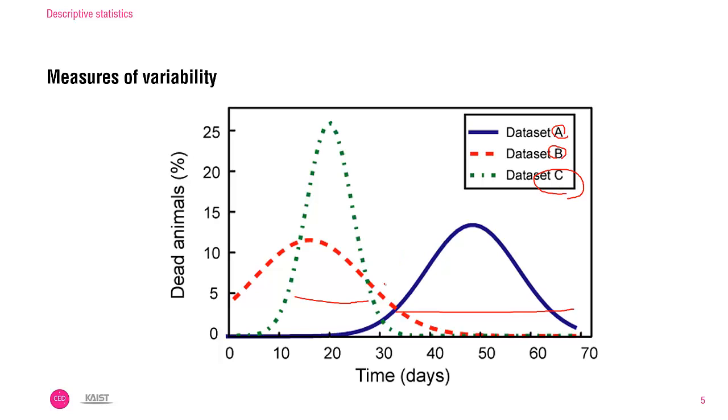The variability of dataset A is almost identical to the variability of dataset B here, just their mean values are different.